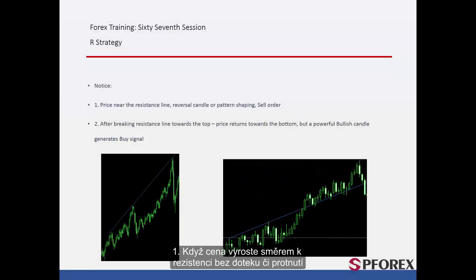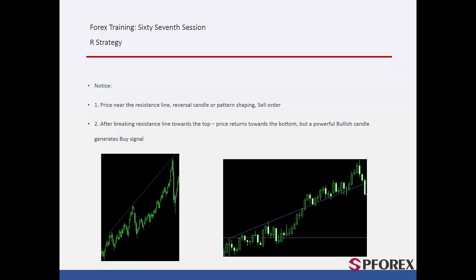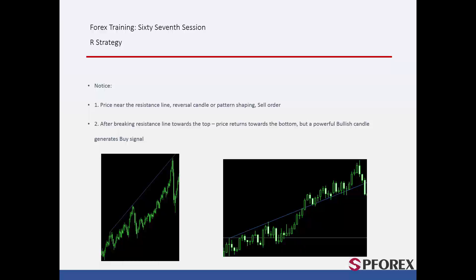When price rises towards the resistance line without touching or crossing anything, if a powerful bearish candle forms near the resistance line, then a powerful and reliable sell signal is generated after price goes lower than the bearish candle. On the left graph, price could not cross the gradient resistance line, and after it went up near this line, a dark cloud or engulfing candle has formed. Thus, a trader could place a sell order below the low price of the given candle.